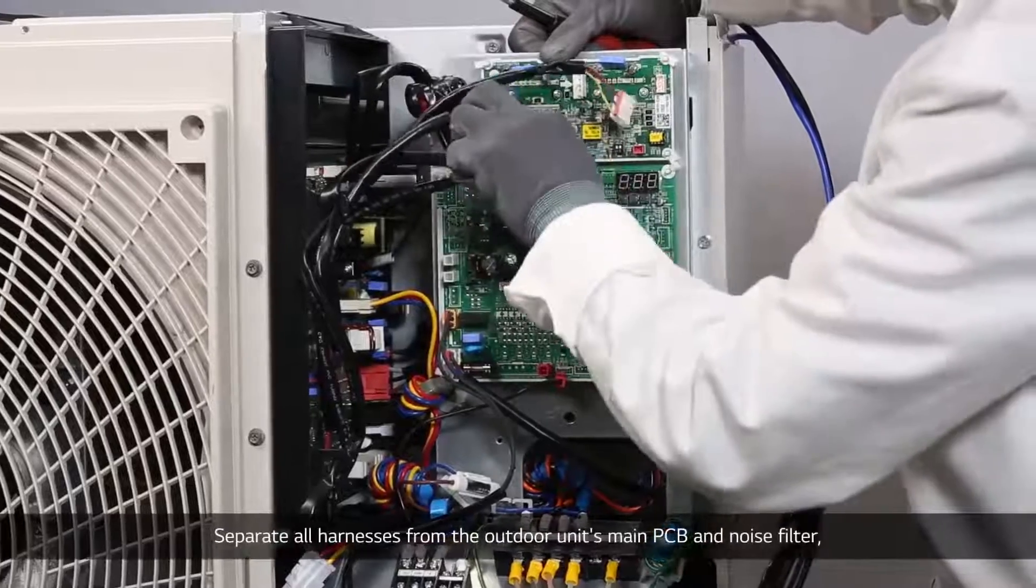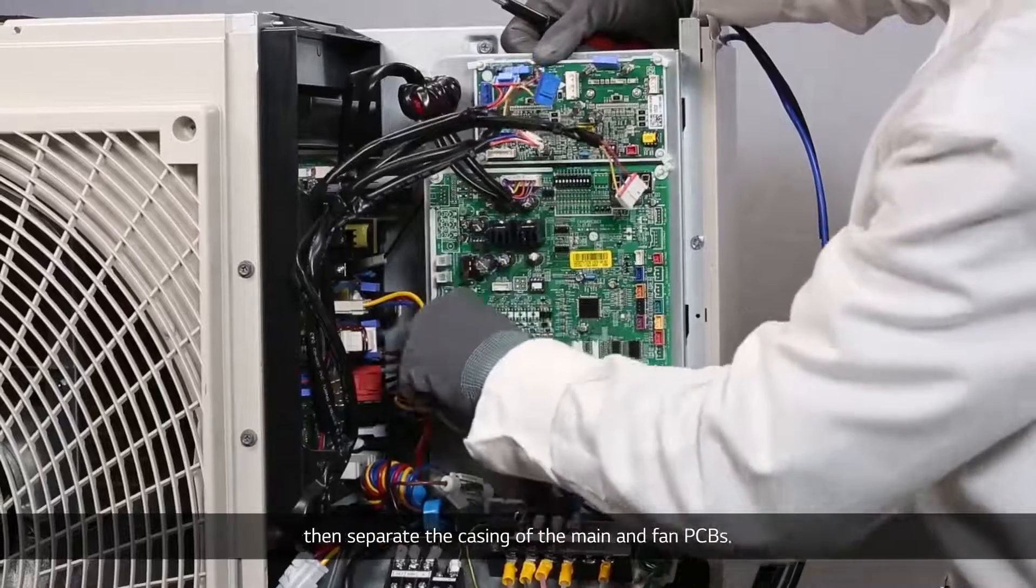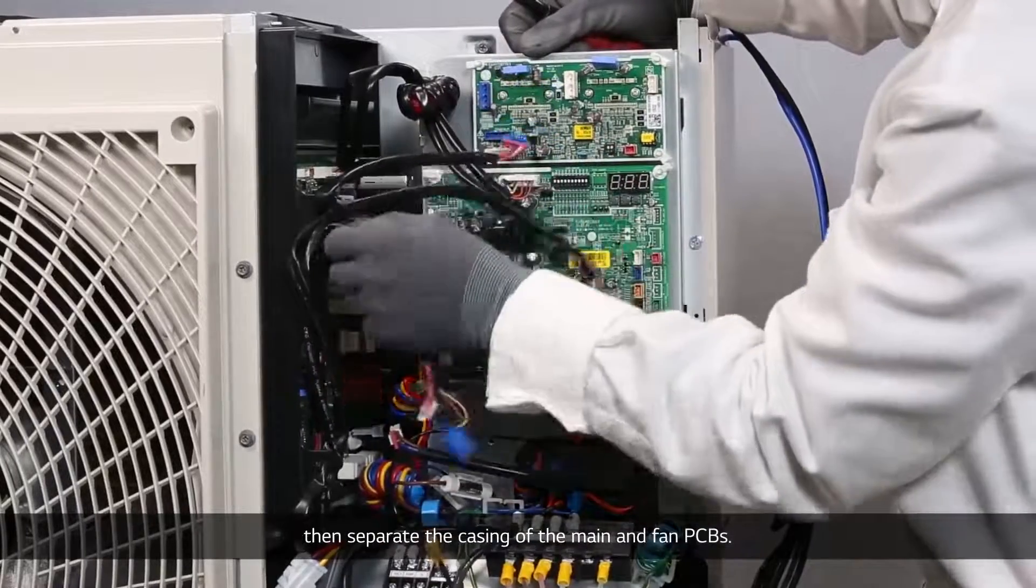Separate all harnesses from the outdoor unit's main PCB and noise filter. Then separate the casing of the main and fan PCBs.